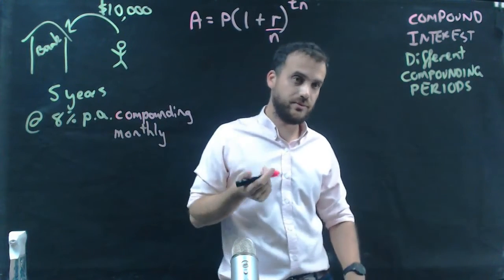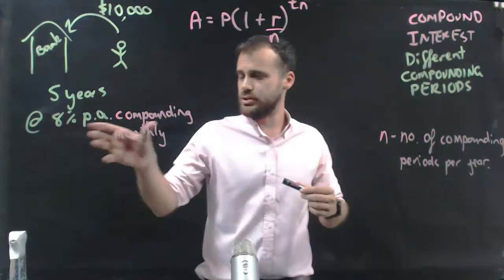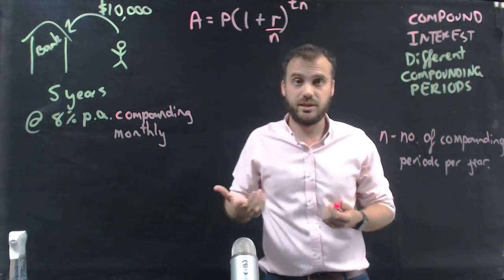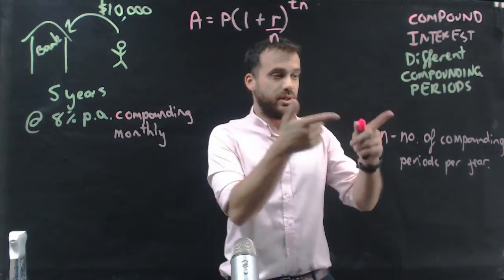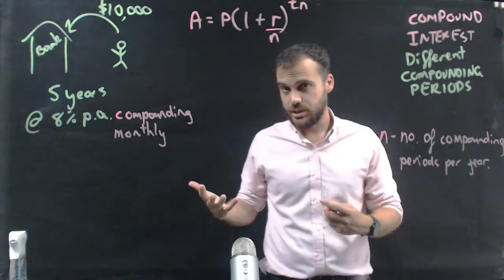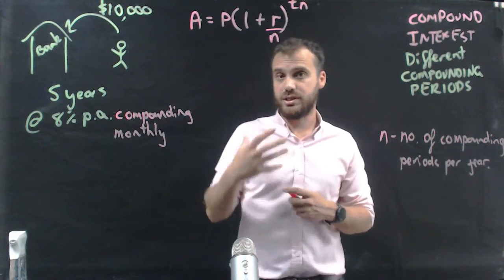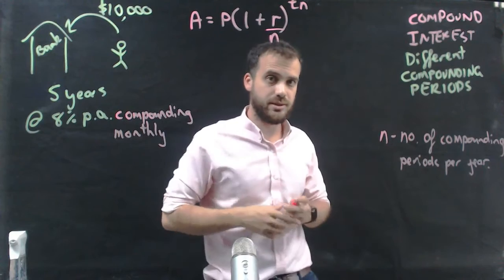What's N? N is the number of compounding periods per year. If compounding monthly, N equals 12, the number of months in a year. If compounding weekly, N equals 52. If compounding quarterly, N equals 4. If compounding every six months, N equals 2. N is the number of times it compounds per year.